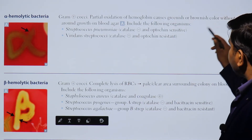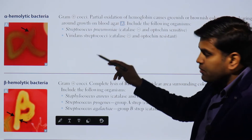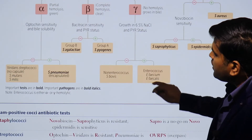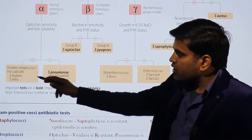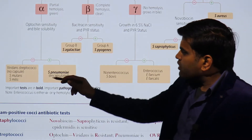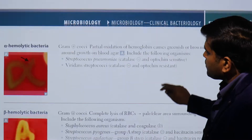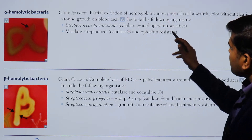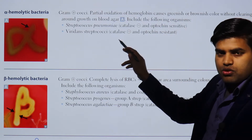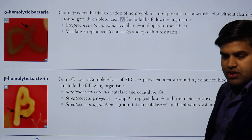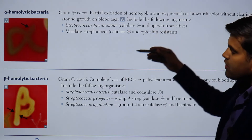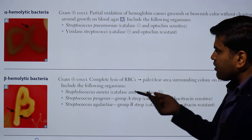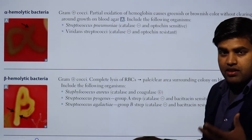The alpha hemolytic organisms on blood agar include two groups: Streptococcus pneumoniae and the viridans group of streptococci. We can differentiate between them by optochin sensitivity and bile solubility tests. Both are catalase negative, so they belong to the streptococcus group. Streptococcus pneumoniae is optochin sensitive and bile soluble, whereas viridans streptococci are optochin resistant. S. pneumoniae is responsible for pneumonia, meningitis, sinusitis, and otitis media, while viridans streptococci are mainly responsible for infective endocarditis.